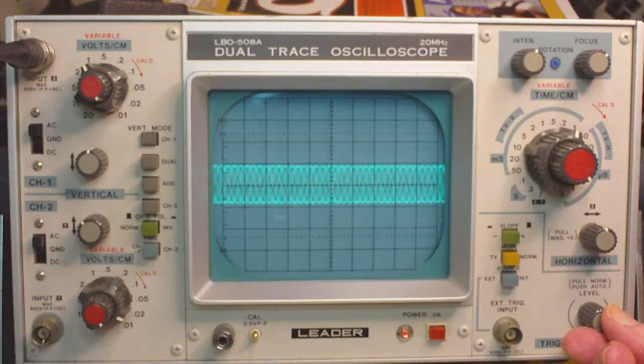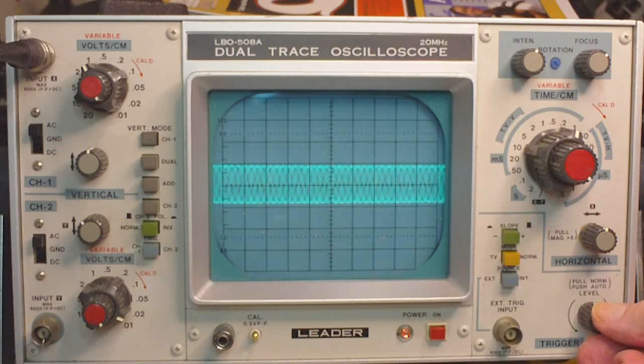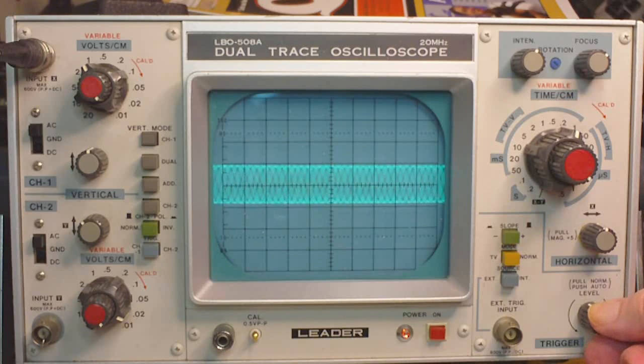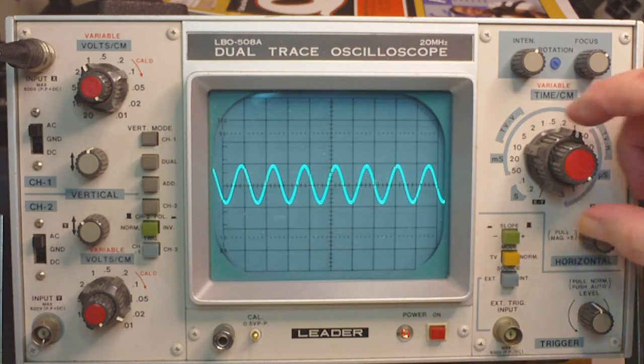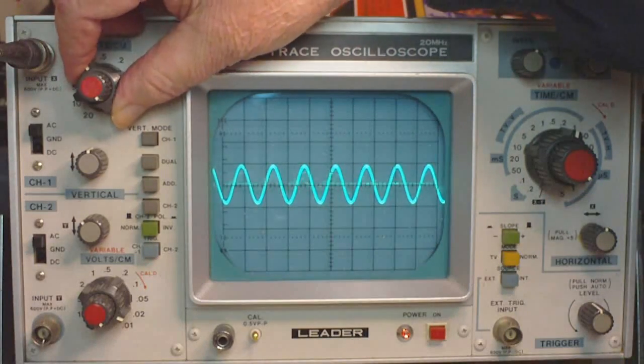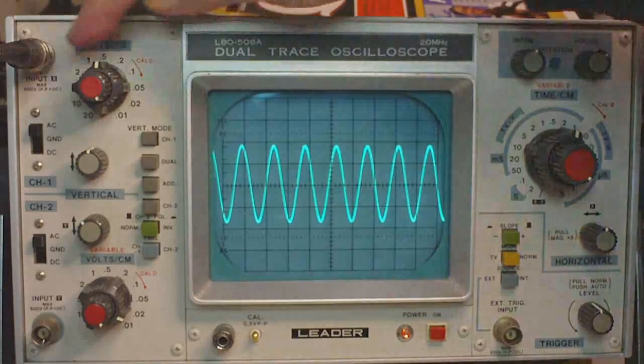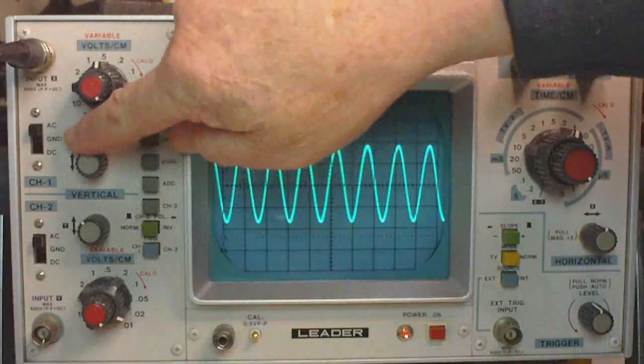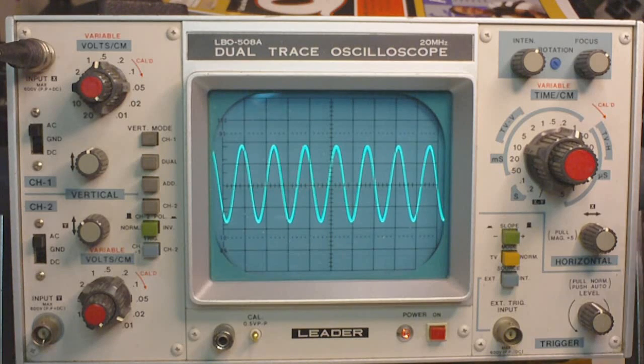Bring this back up in sync. There we go. Now I can also increase the amplification with this knob here. I've got it in AC mode. I almost always use the scope in AC mode. If I'm going to be working with DC, I usually use a voltmeter.